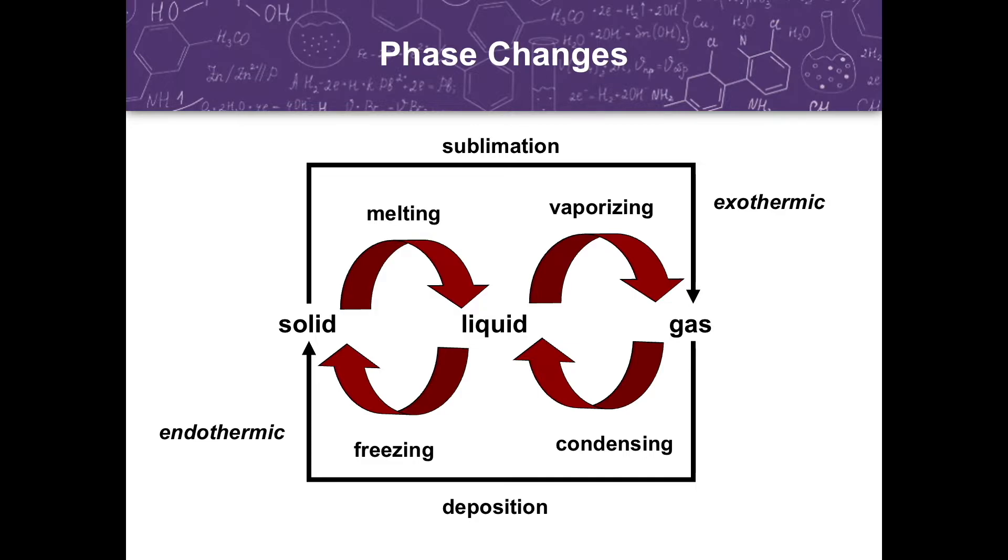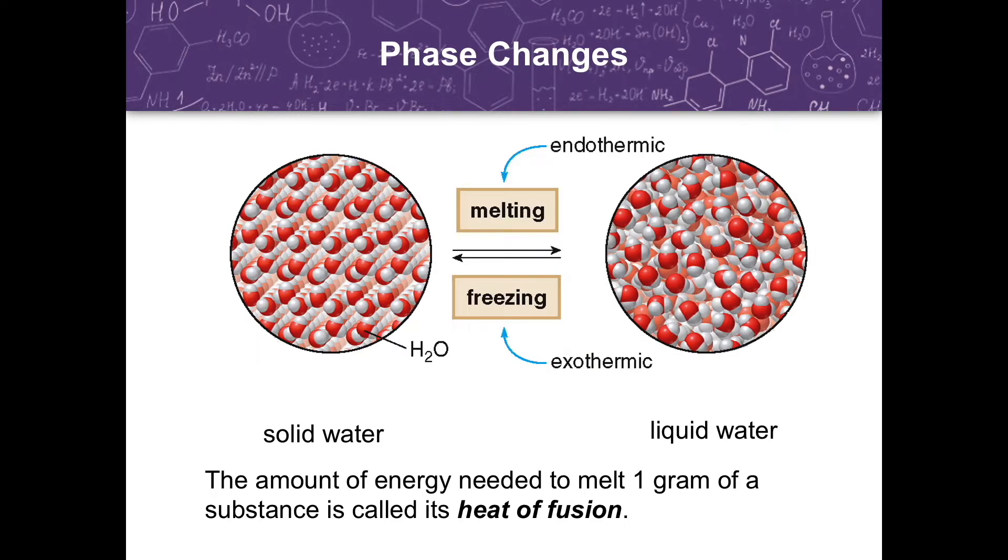From our previous video, we discussed the endothermic and exothermic reactions. Endothermic reactions absorb energy from the surroundings, while exothermic reactions release energy to the surroundings. We call the amount of energy needed to melt one gram of a substance the heat of fusion.